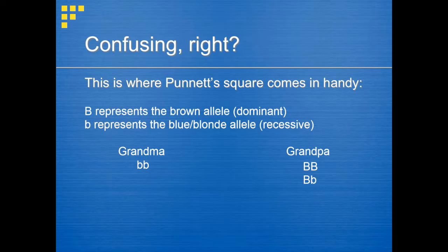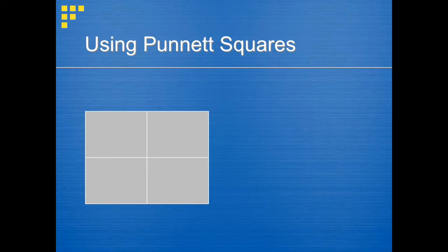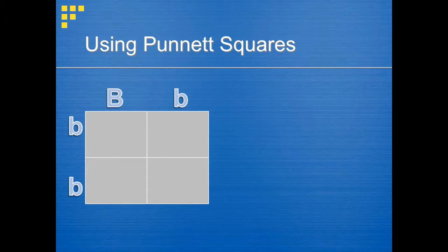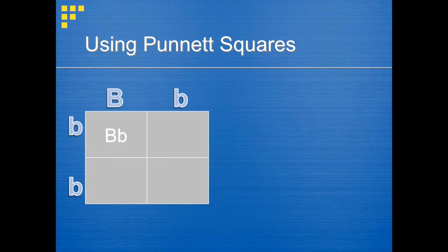Now that we know the possible genotypes for grandma and grandpa, we can use the Punnett square to find out the possible genotypes for father. Punnett squares are set up like multiplication tables. We draw a square and split it into four smaller squares, then write the genotype for one parent along the side and the other along the top. We'll use capital B, lowercase b for grandpa. The top-left box gets capital B from grandpa and lowercase b from grandma, giving genotype capital B, lowercase b. The top-right box gets lowercase b, lowercase b.